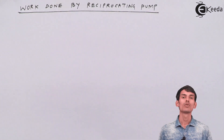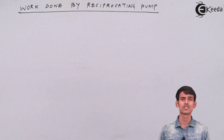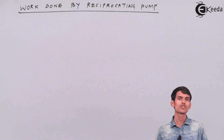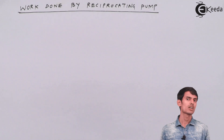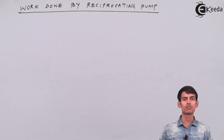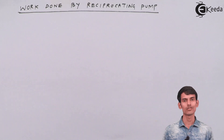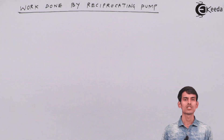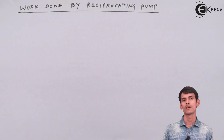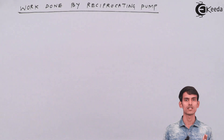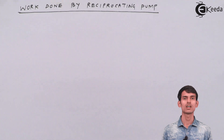The topic of work done by reciprocating pumps is a pretty simple one. For that, you should know how much water is getting discharged every stroke. The volume of water discharged is nothing but the cross-sectional area of the piston into the length through which it is displacing — we call it the swept volume. That is the amount of volume getting discharged in one stroke.